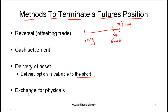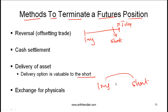Another way of terminating a futures position is through the exchange for physicals. In an exchange for physicals, say you are long and you identify another party that is short on the same contract. You can meet with the short party outside the exchange and simply settle with them, then both parties inform the exchange that this settlement has taken place, and the position for both the long and short is terminated.